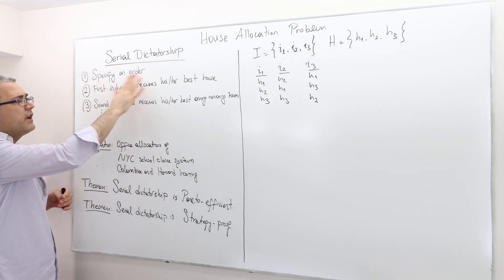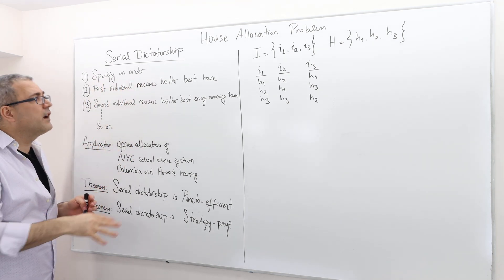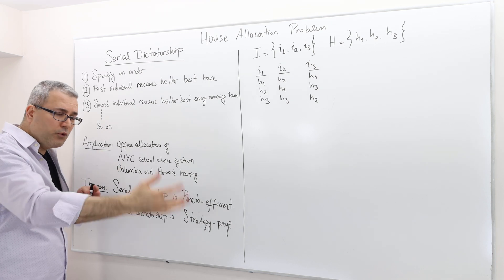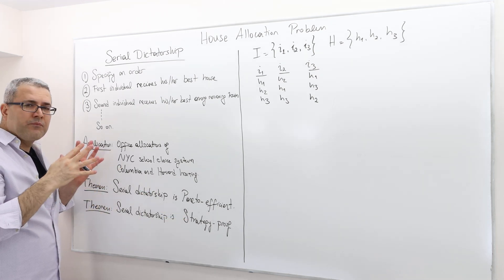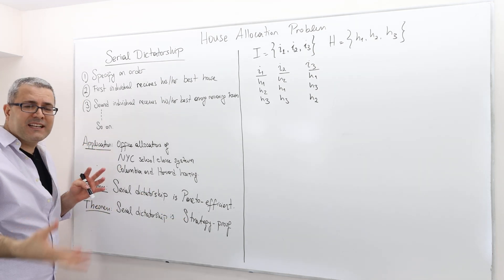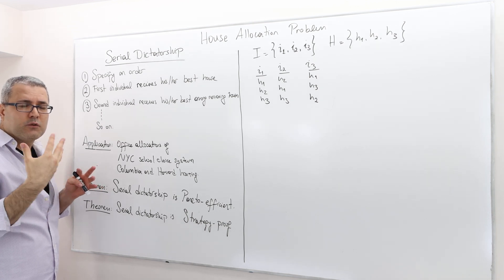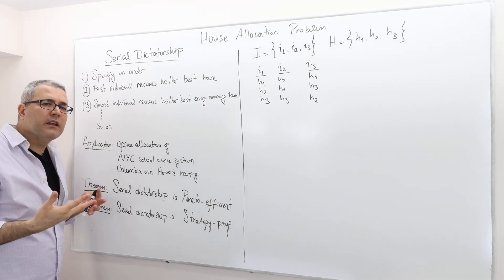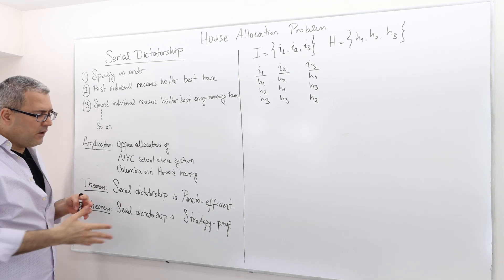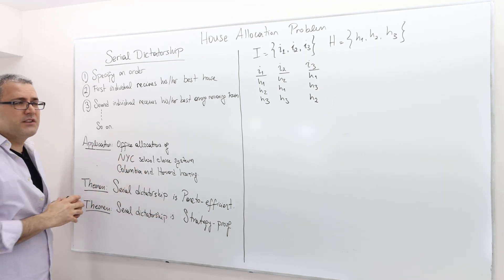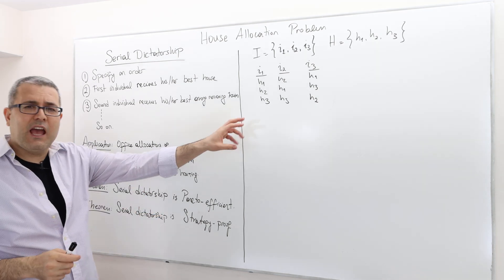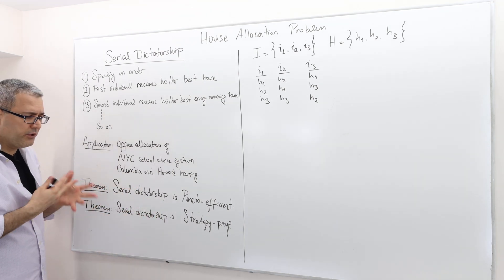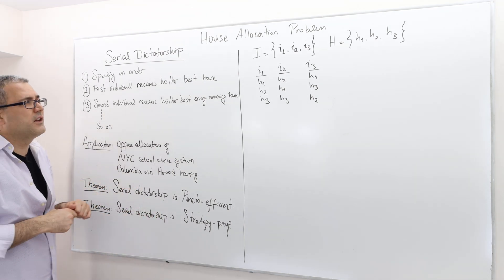The second important property is that the serial dictatorship mechanism is strategy-proof. Once again, regardless of the order you specify and regardless of the house allocation problem, the individuals, once asked to reveal their preferences over houses, have no incentive to lie — they're not going to benefit. So it's strategy-proof. Here I have one numerical example, and let's see if the outcome is really Pareto-efficient and strategy-proof.